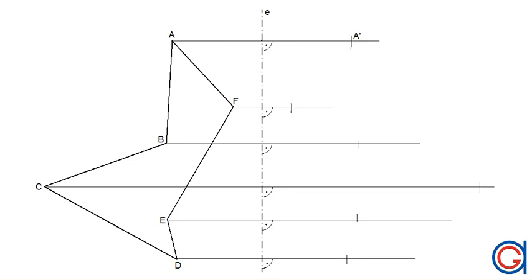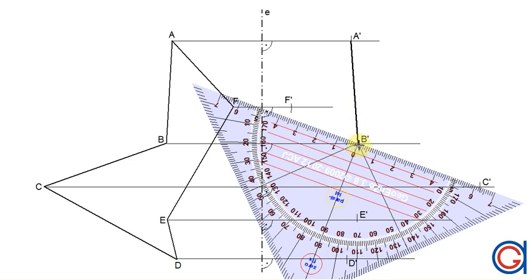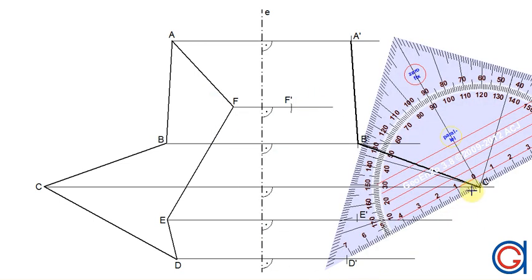So we are going to draw the symmetrical figure in a thicker line. We will start joining A prime to vertex B prime, and now from vertex B prime to C prime.